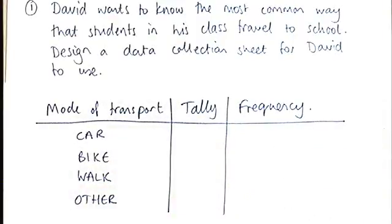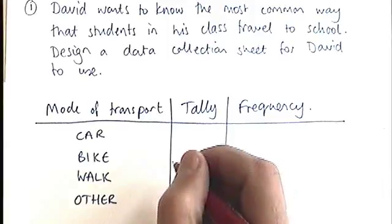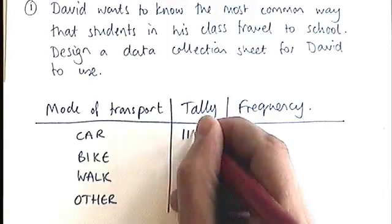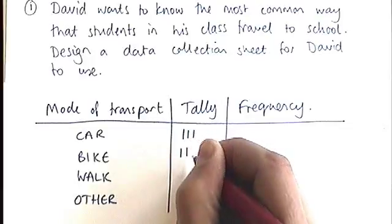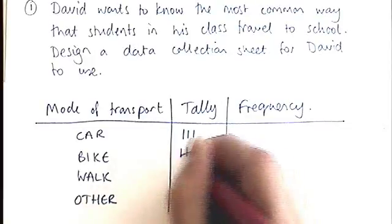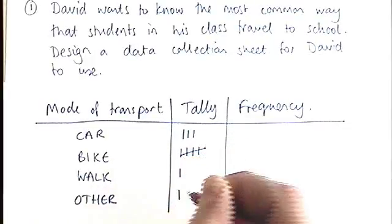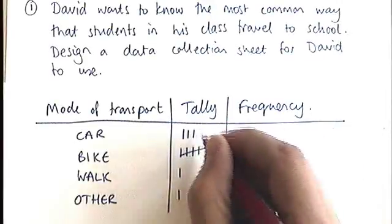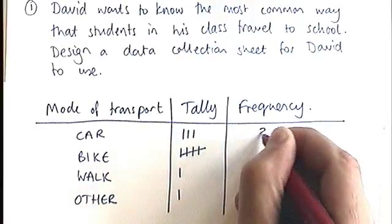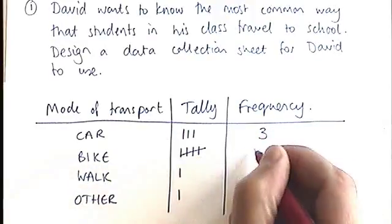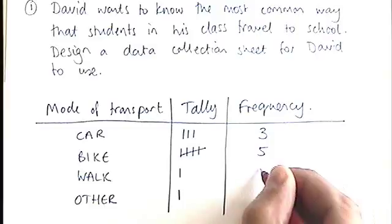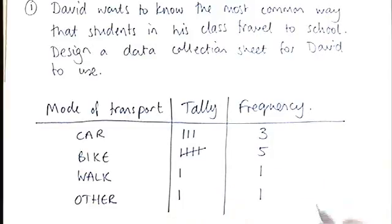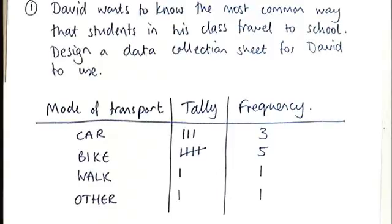Sometimes they ask you, as an additional bit, to invent data for — let's say — ten people in this tally chart. So you'd tally off one, two, three, four, five, six, seven, eight, nine, ten. That way you can fill in the frequency. The frequency is just the number of times someone said it — so three people said car, five said bike, one said walk, and one said other. That is a data collection sheet — specifically a tally chart — and it's really simple and straightforward.